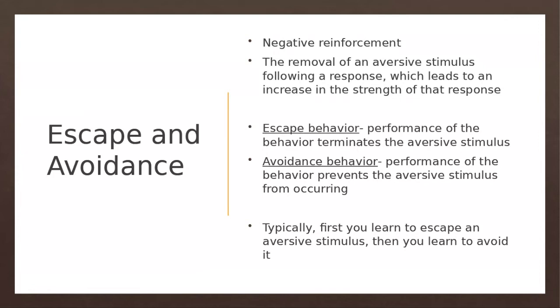Typically, people first learn to escape, then learn to avoid. In the beginning, you have to experience the aversive stimulus, engage in the behavior, and that behavior makes the thing you don't like stop. In the future, you engage in avoidance behavior, meaning you perform a behavior that never allows the aversive stimulus to occur.